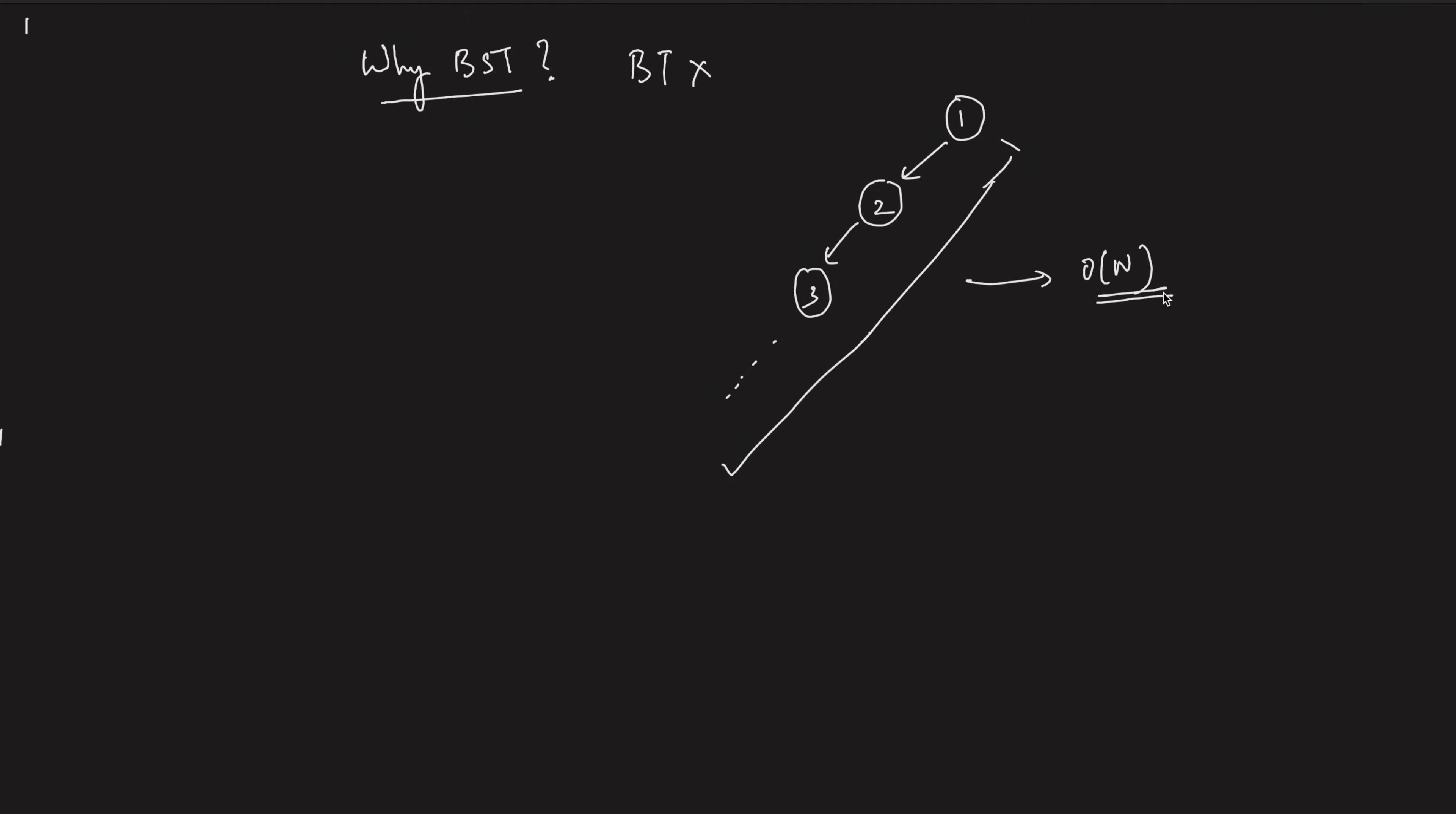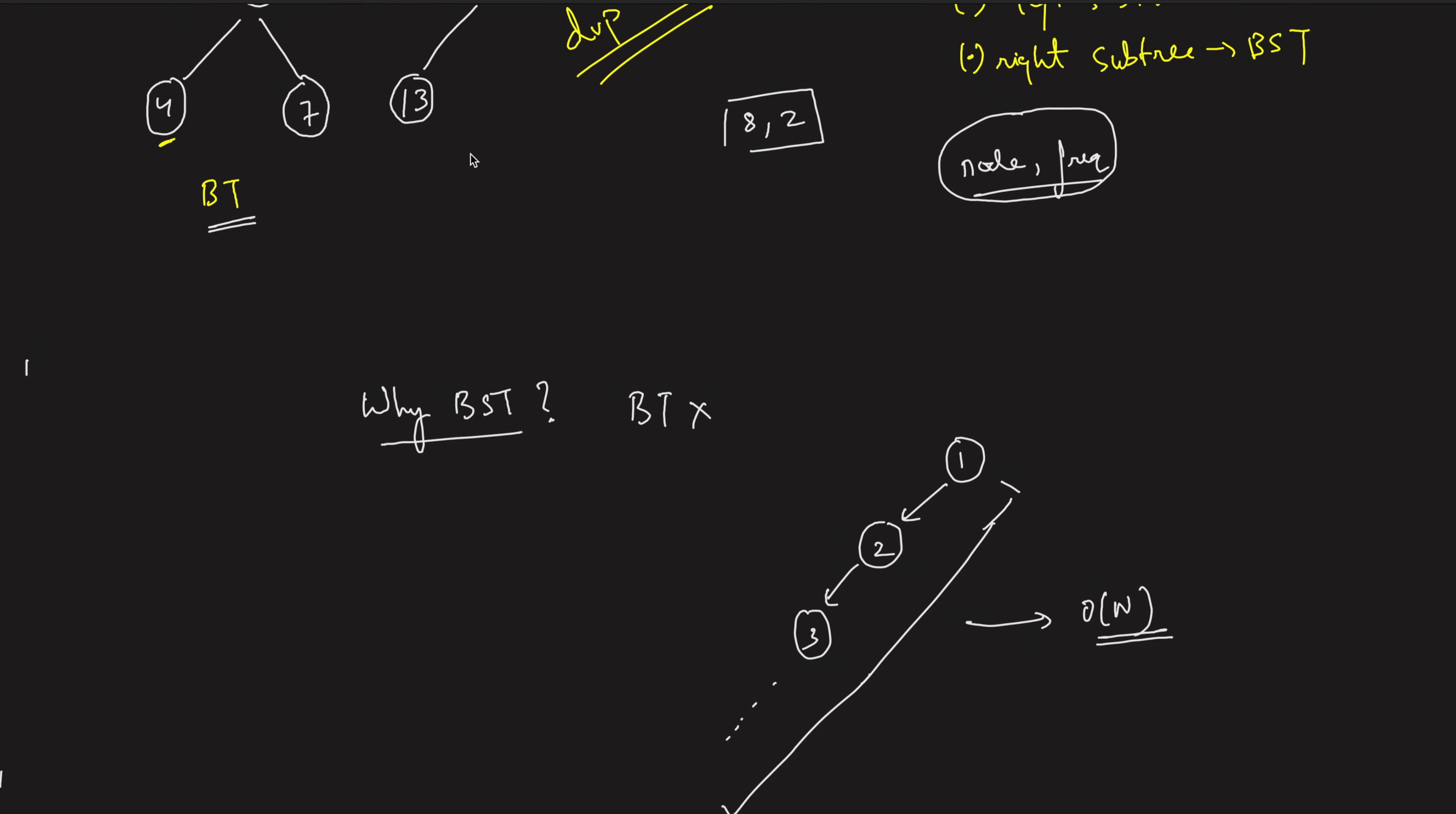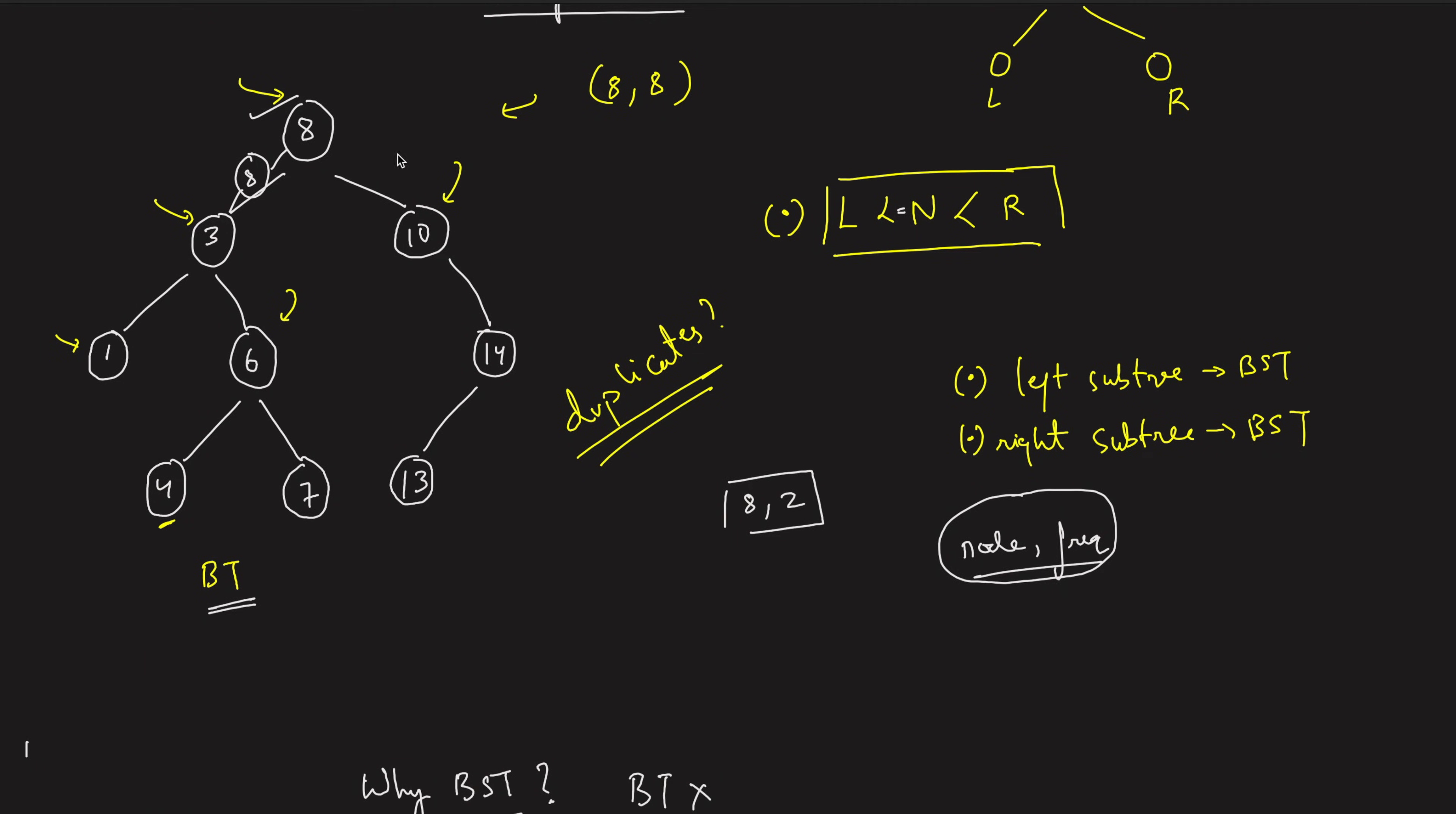In binary search tree, generally, I'm not saying always, generally in a binary search tree, all the heights of the tree are log n. If you carefully observe, this is not a degenerate tree. So the height of the binary tree is generally kept as log base 2 n.